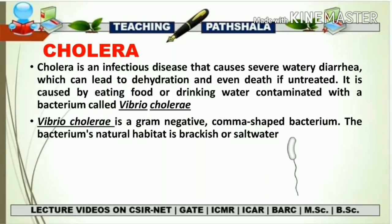Let's start with some general introduction of cholera. First of all, cholera is an infectious disease that causes watery diarrhea, which can lead to dehydration and if it remains untreated, it will lead to death. If we talk about the source of this infection, it may be a contaminated food or contaminated water, and this contamination is mainly due to a bacterium called Vibrio cholerae. Any water or food that is contaminated with Vibrio cholerae will lead to a disease called cholera.